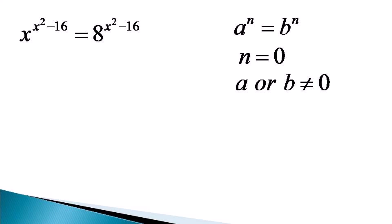So let us check this condition from the indices, which gives x square minus 16 equals 0, and x square becomes equal to 16, or x becomes equal to plus minus 4. For these values of x equal to plus minus 4, the base on the left hand side is non-zero, so these two values are also a solution.